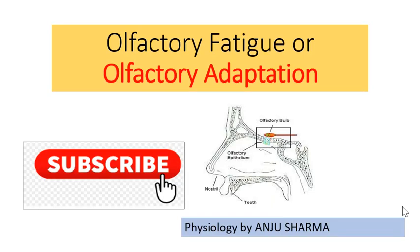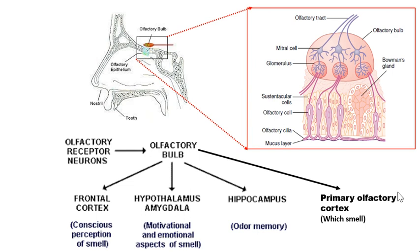Today's topic is olfactory adaptation or olfactory fatigue. We have already made an olfaction video in the special sciences playlist. Just for a rough review: this is the cribriform plate, through which the olfactory cells pass. These are the cilia exposed to any smell. These are olfactory cells which synapse on mitral or tufted cells in the glomerulus, and the whole part is called the olfactory bulb.